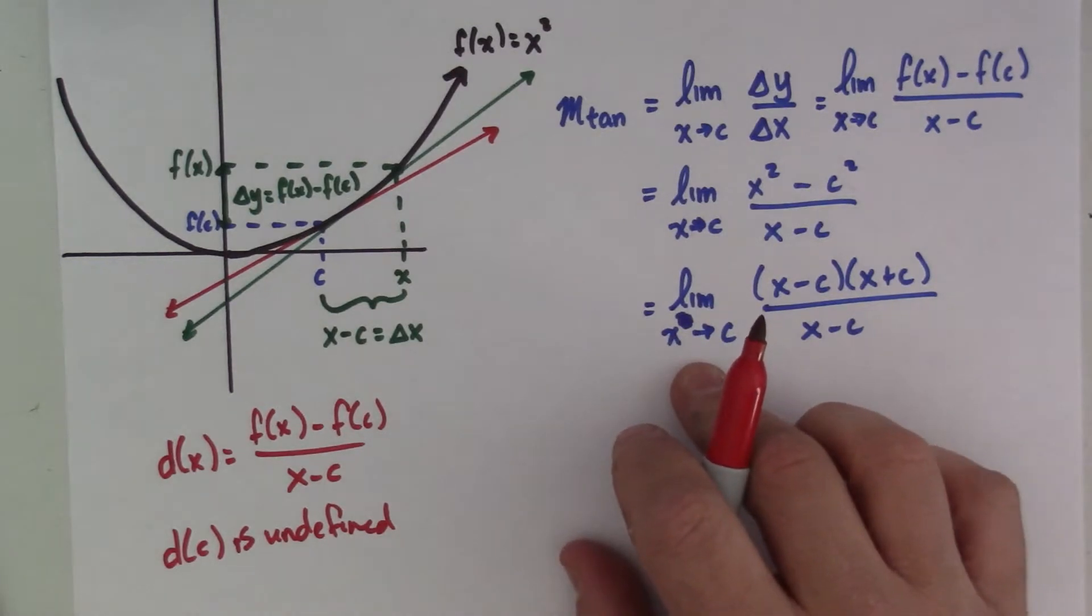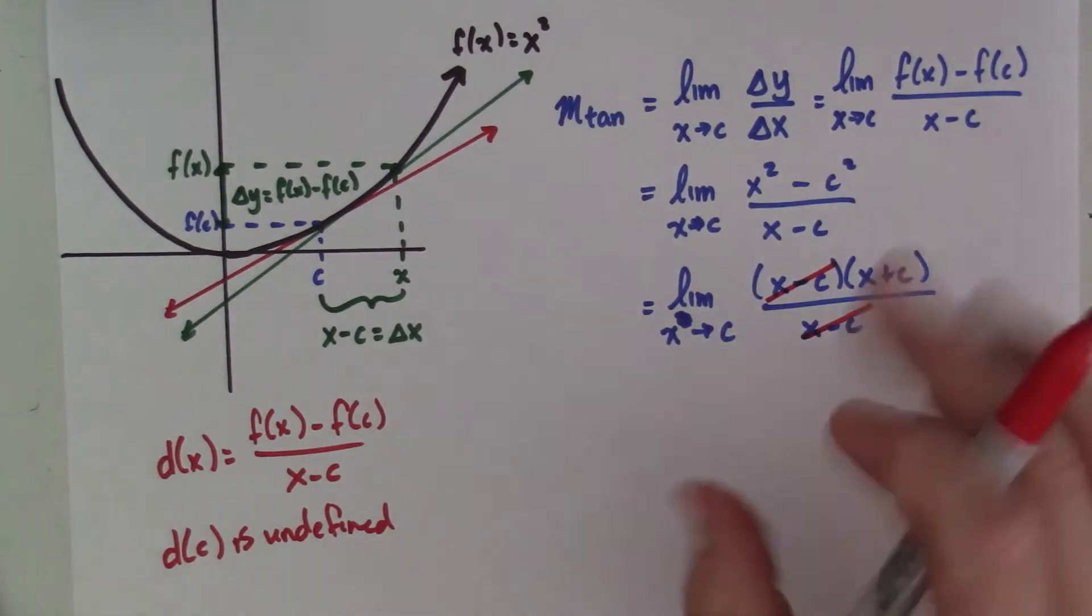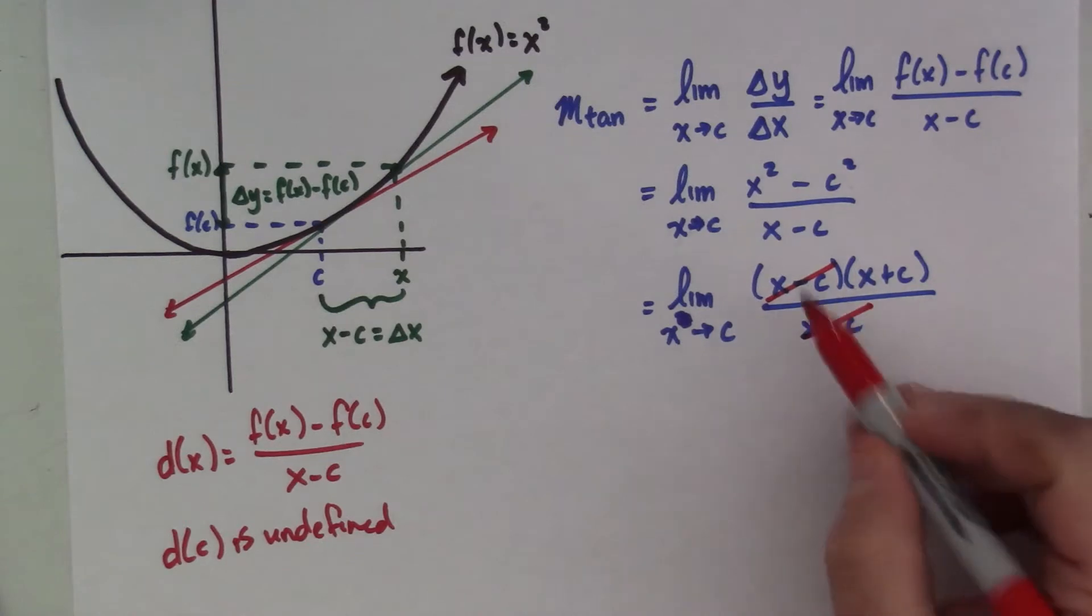I am not dividing by zero, and I'm not canceling zero over zero, assuming it's one. What I'm doing is I'm saying these two around c, not at c, but very close to c, behave just like one, which means I can rewrite this as the limit as x goes to c of x plus c.